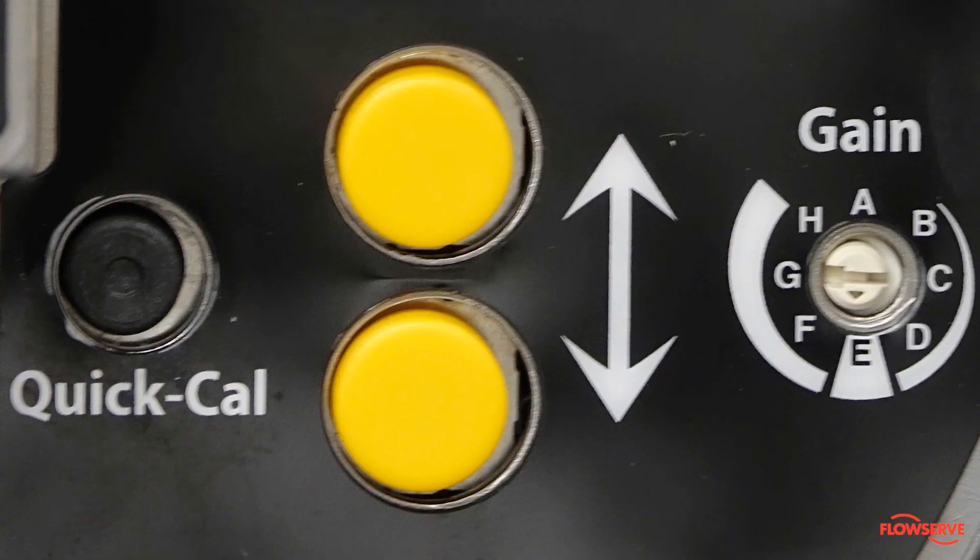For example, this will allow you to use the two yellow buttons to manually adjust the valve to a certain point, such as 80% stroke as full open.